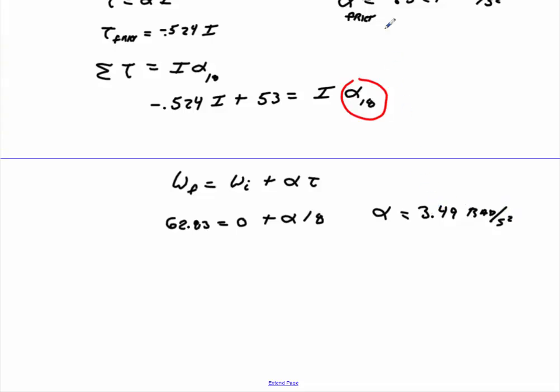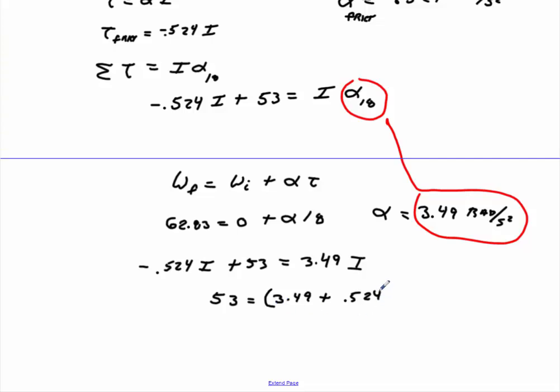All right, so now all we have to do is take that value that we have right here, put it back into this equation right here. That gives us minus 0.524 times I, plus 53, is equal to 3.49 times I. That gives us 53 is equal to 3.49 plus 0.524 times I. Solve for I, I equals about 13.20 kilograms times meters squared. And that's how you get the moment of inertia.